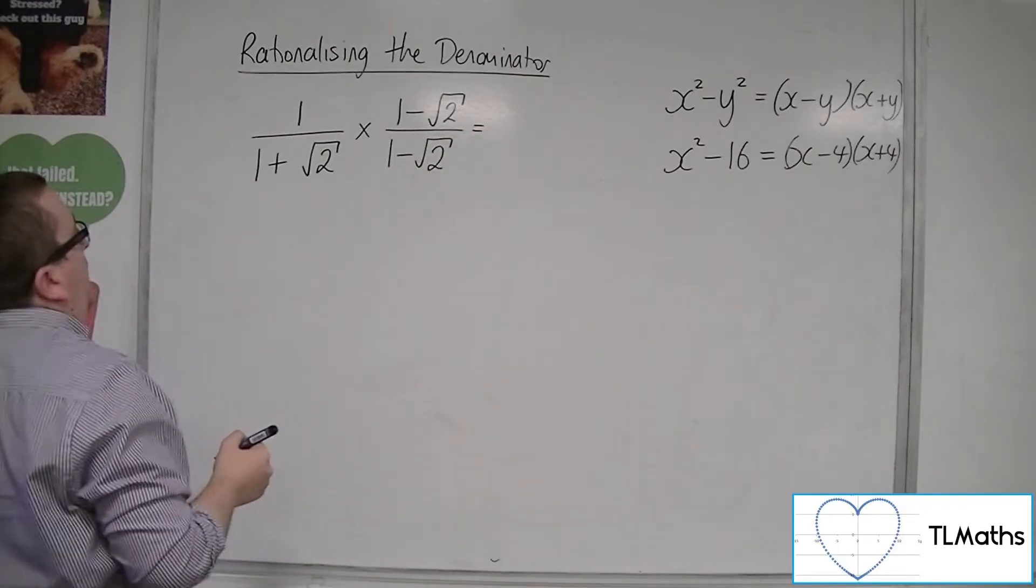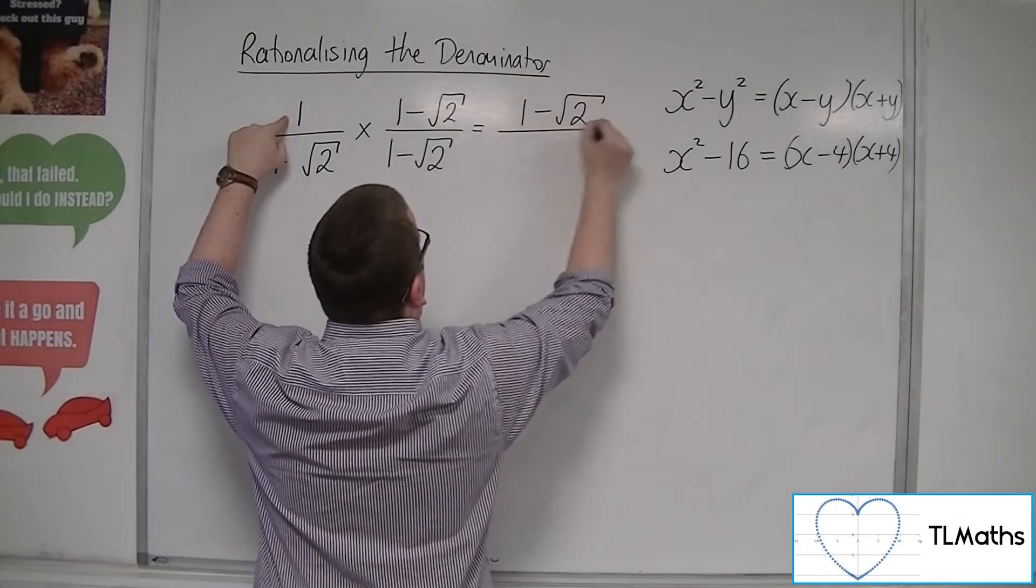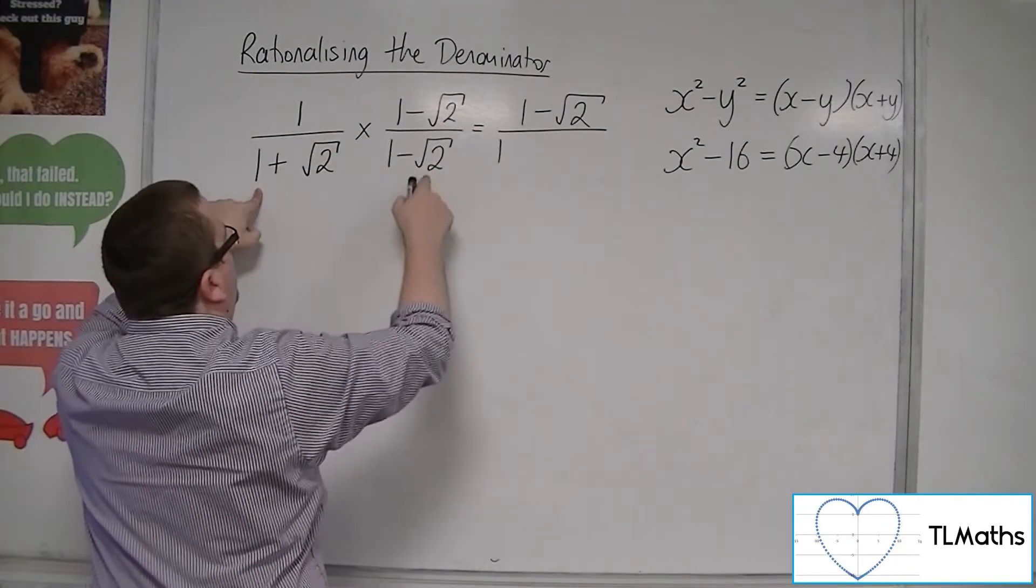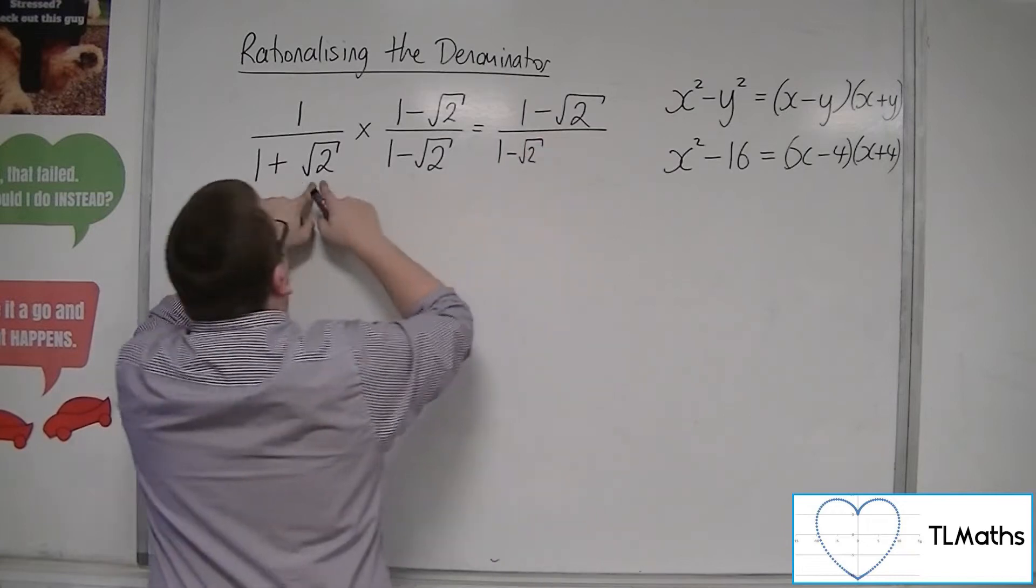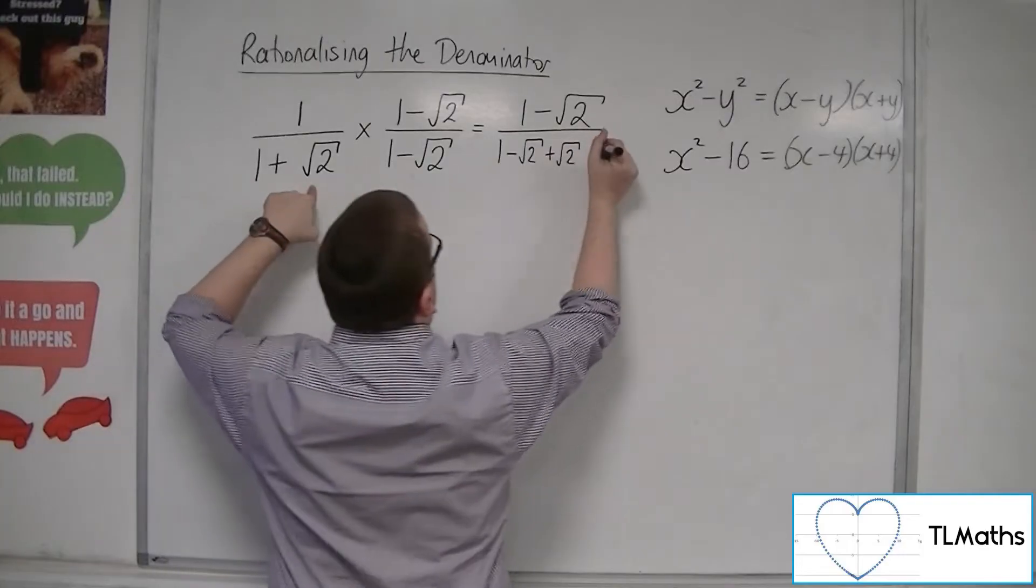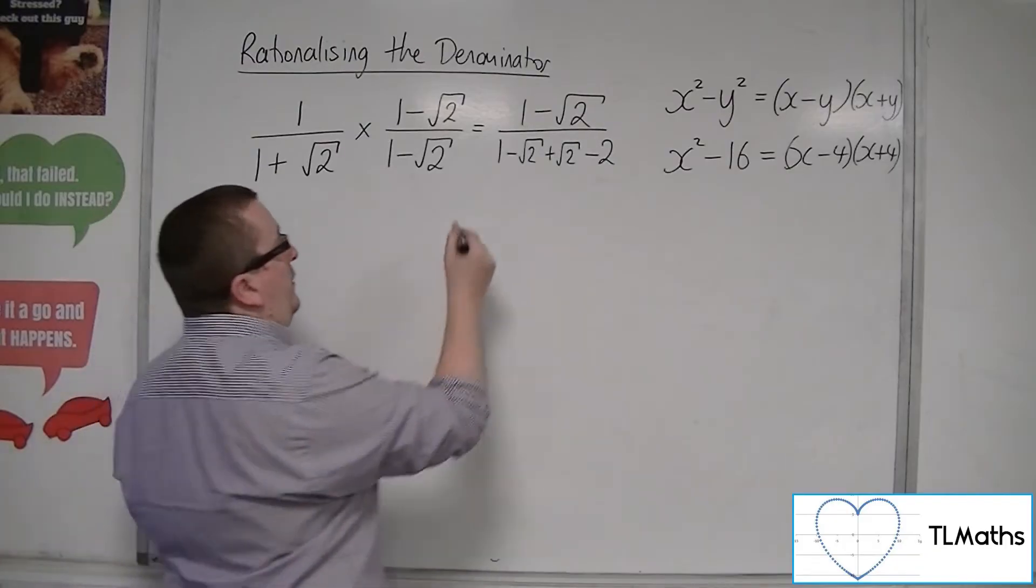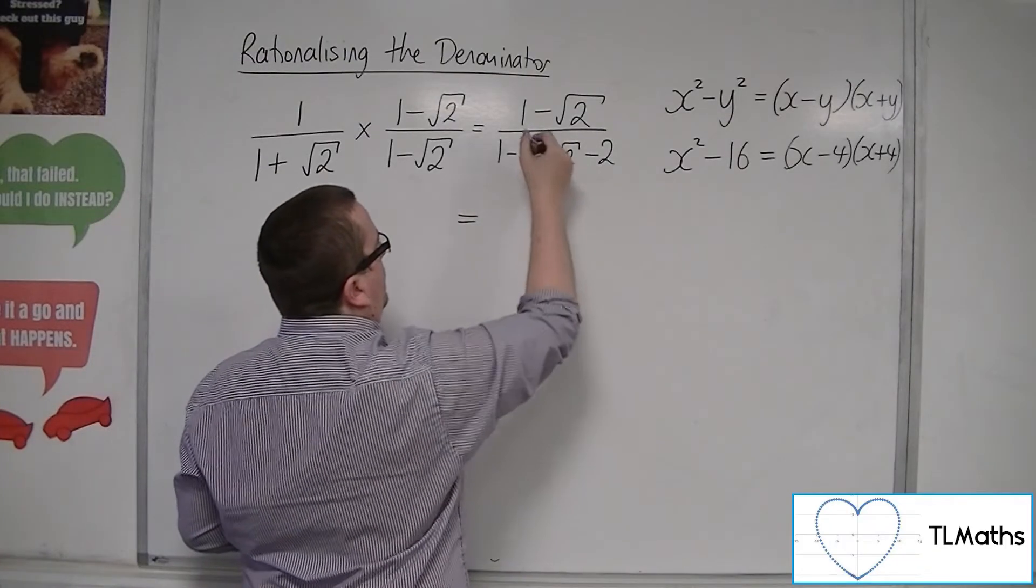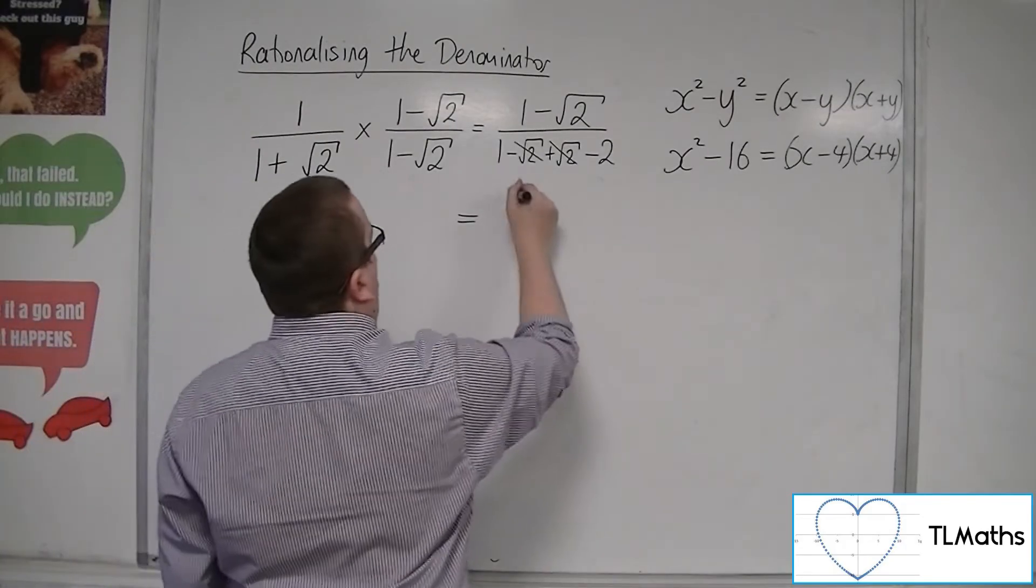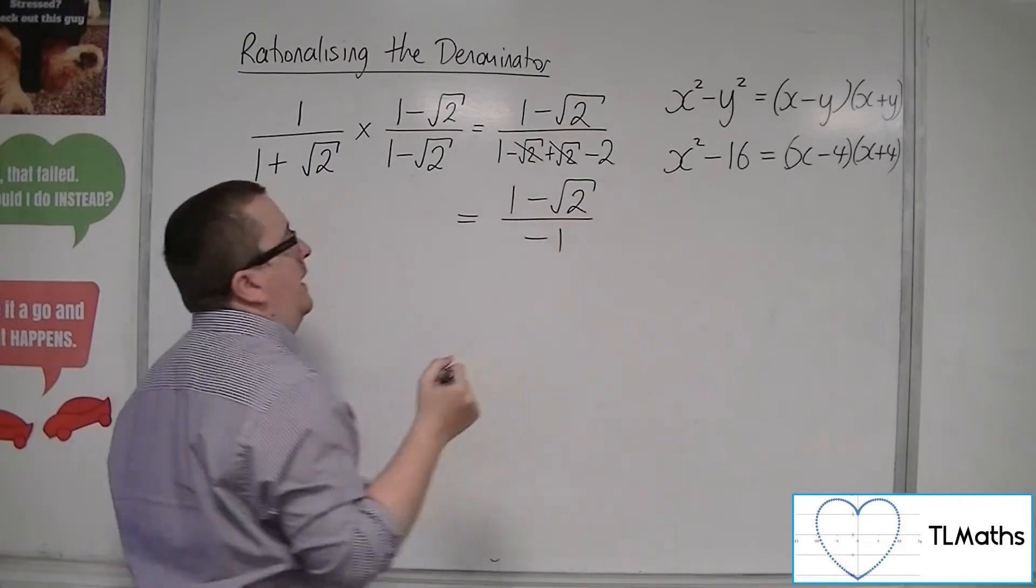So we get 1 times 1 minus root 2 in the numerator. In the denominator, we've got 1 times 1, 1 times minus root 2, root 2 times 1, and root 2 times minus root 2, so that's just minus 2. And thankfully, what we see is that those surds in the denominator cancel. We've got 1 minus root 2 in the numerator, and 1 take away 2 minus 1 in the denominator.